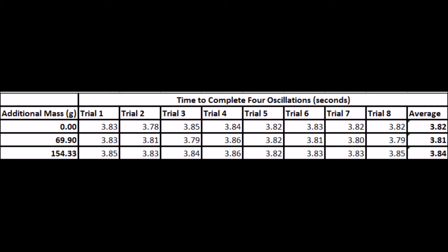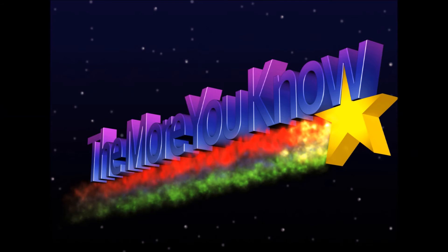The results clearly show that the mass of a pendulum bob does not affect the time it takes for the pendulum to complete one full oscillation. Even though there are slight differences between the time it takes for the pendulum to complete four full oscillations between trials and masses, these differences are not a result of the mass of the pendulum bob being different. They can be attributed to both human error and friction.